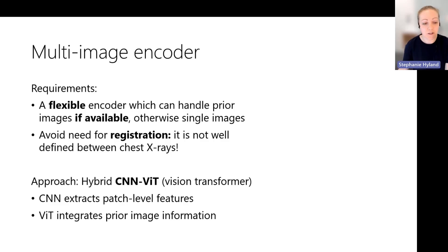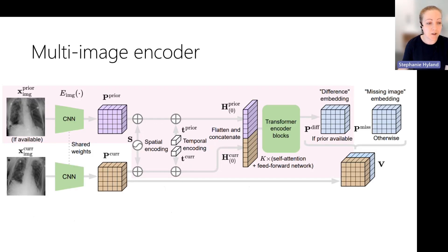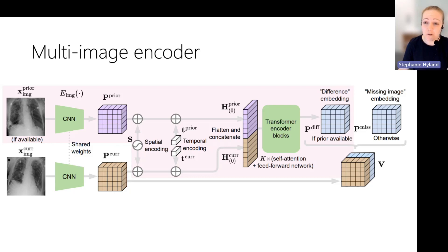Our approach is a hybrid CNN vision transformer. The CNN is good at extracting patch-level features from images, while the vision transformer integrates prior information when available. Both images pass through the CNN to collect patch-level features. The transformer blocks incorporate both the prior and current images where available; if not, we use a missing image embedding. If there is a prior image, we extract a difference embedding which aims to capture the difference between the current image and the prior.